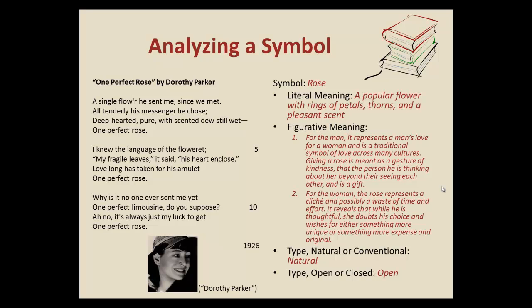Is it open or closed? Well, with as much as this particular symbol changes throughout each stanza — it has three or four different meanings by the time you finish — we would have to say this symbol is open; it has multiple meanings. And this one would definitely be an example of a traditional symbol rather than an invented one. A rose, not just in American culture but in many cultures around the world, is a symbol of love to another person.